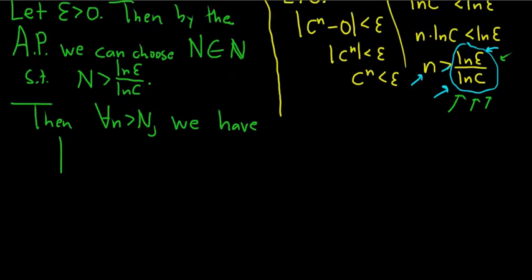So a sub n was c to the n, and then minus 0. So this is going to be the absolute value of c to the n, which is just c to the n. And let's see if we can justify carefully why this is less than epsilon. I mean, I can just write less than epsilon, but that's no fun. Let's really go through it. So note, let's totally work it out.